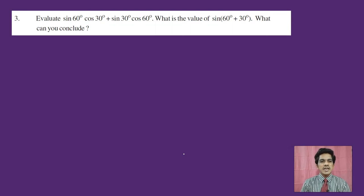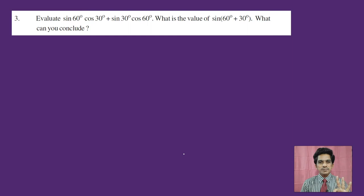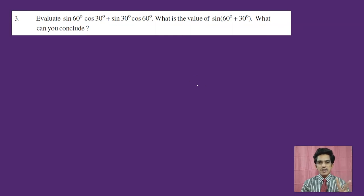Have a look at question number 3: Evaluate sine 60 degrees into cos 30 degrees plus sine 30 degrees into cos 60 degrees. The problem has three parts: first, evaluate that expression; second, find the value of sine of (60 + 30) degrees; and third, draw a conclusion from these two observations.